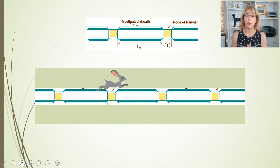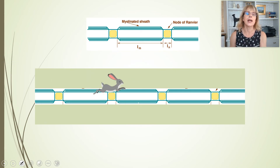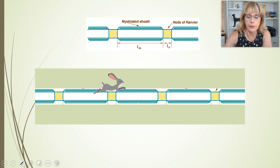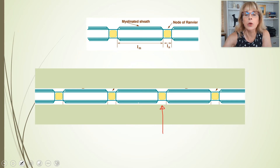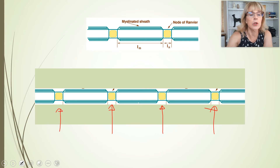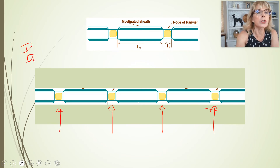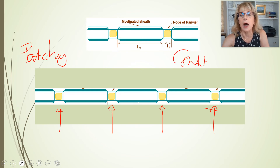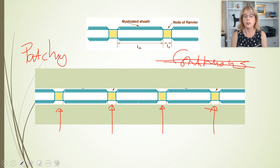This is really important for medical situations. The action potential hops its way down the axon from node to node, and this is how things normally happen. The voltage-gated channels and the sodium-potassium pumps are only found at the nodes of Ranvier, so we say that the distribution of these proteins is patchy or clumped — it is not even. Continuous conduction would be the opposite; this is an uneven distribution.